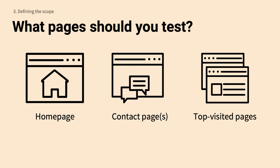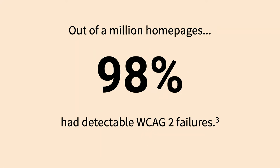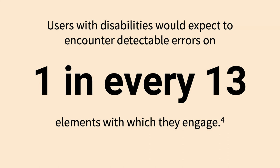When testing, make sure you're doing it across different screen widths — validate all success criteria against your desktop experience and your mobile experience as well. Quick word on homepages: out of a million homepages scanned by WebAIM, 98% had detectable WCAG 2.0 failures. That translates to users with disabilities encountering detectable errors on one in every 13 elements they engage with — a horrifying number. So it's very important that these key entry points are as accessible as possible.